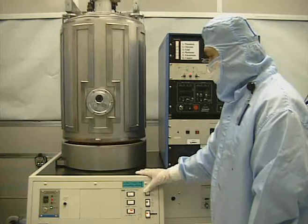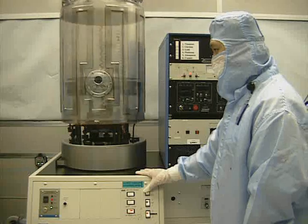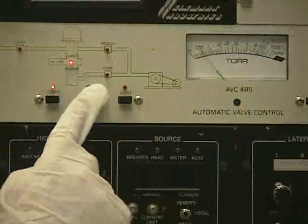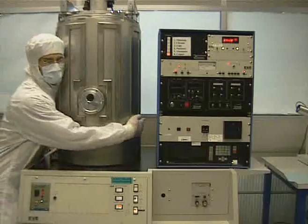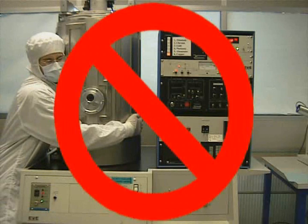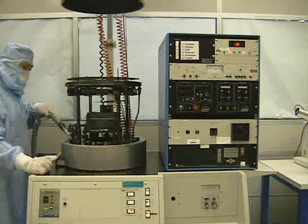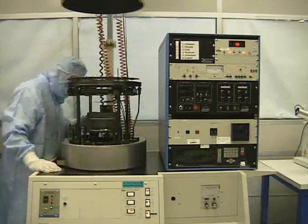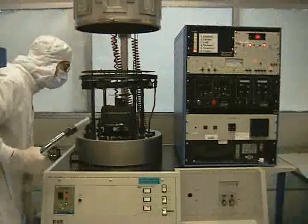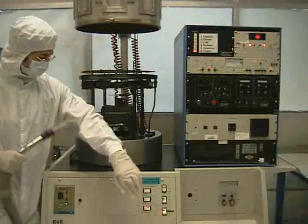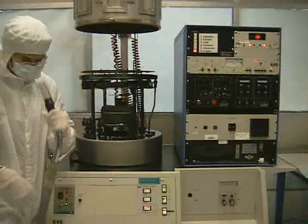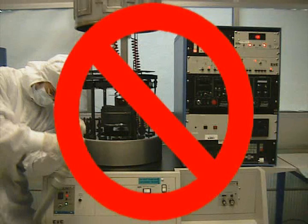Then press the hoist up button on the hoist controller in order to raise the chamber all the way. Do not try to hoist up the chamber before the chamber is completely vented, and be sure to use the hoist up button instead of using your strength. Clean the area by vacuuming any flakes or debris that have been left on or around the chamber. Cleaning the area helps create a better seal between the metal and the rubber. It is very important to vacuum the area. Do not forget to do it.